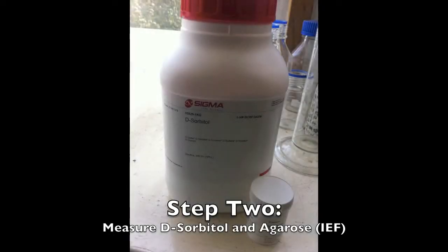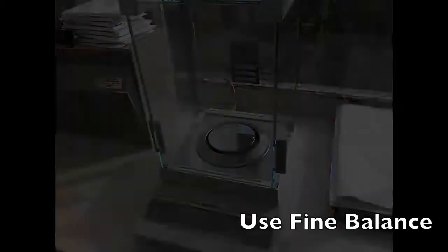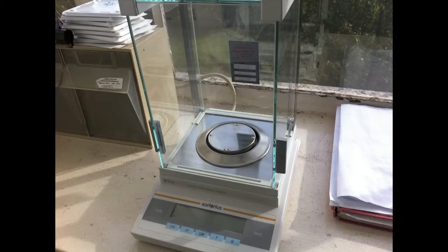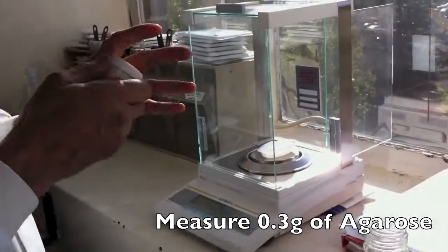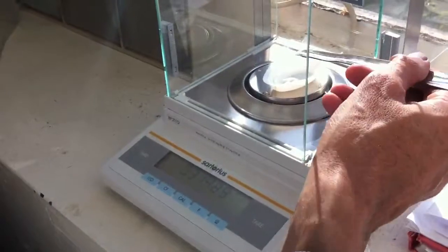The next step is to measure out the dry ingredients. For this step you need to use the fine balance. You need to tare it to zero with the weighing boat on it. First accurately measure out 0.3g of the IEF quality agarose, which should be in the small white tub.